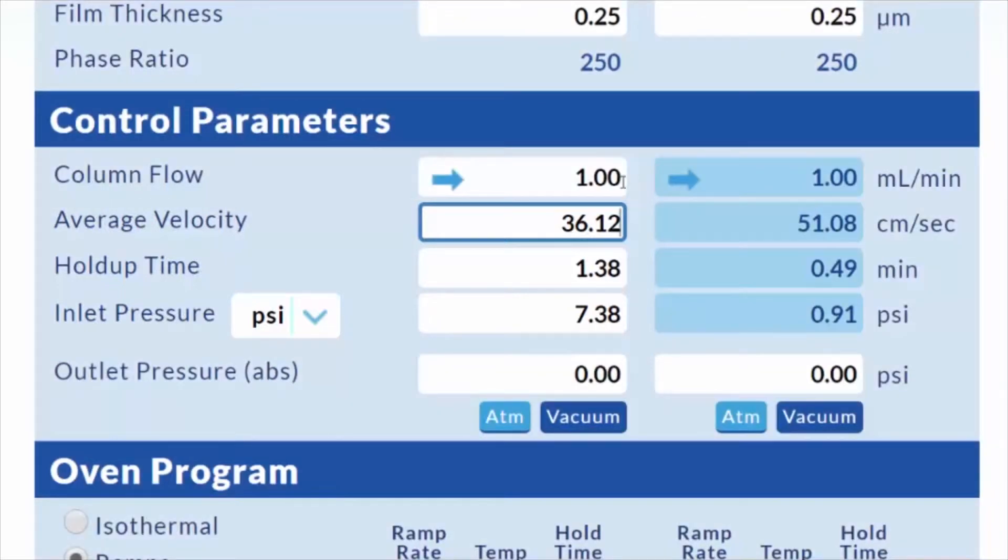Because this is an MS method, make sure that the outlet pressure is set to 0 psi and the vacuum button is selected. These are the default selections, but note that the modeler output would be different if you were using an FID, for instance, and the outlet pressure was atmospheric pressure instead of the vacuum generated by a mass spectrometer.